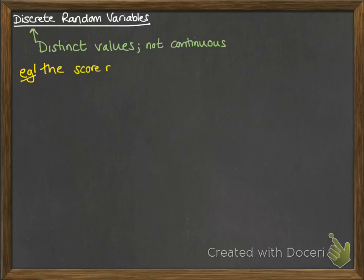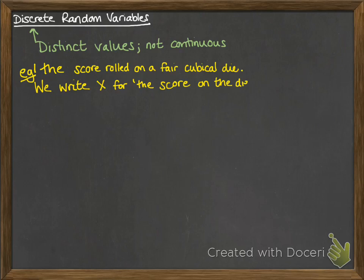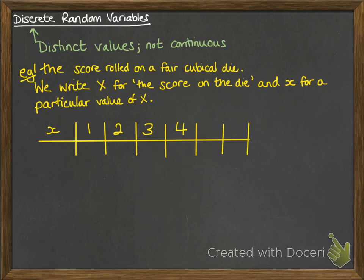So for example, we can have the score rolled on an ordinary dice. So we need to set up some notation for this first. We write a capital X, uppercase X, for the score on the die and a lowercase x for a particular value that it can take. So it looks like this is a table. So we have those particular values that it could be, so we're writing the lowercase x could be any of the values from 1 to 6.